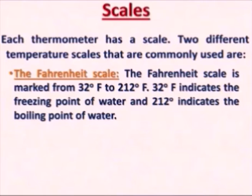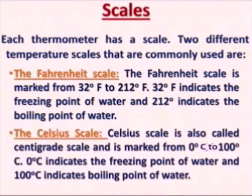Celsius is also a measurement of temperature. The Celsius scale is also called the centigrade scale, and it is marked from 0 degree Celsius to 100 degree Celsius. 0 degree Celsius indicates the freezing point of water, and 100 degree Celsius indicates the boiling point of water on a thermometer.